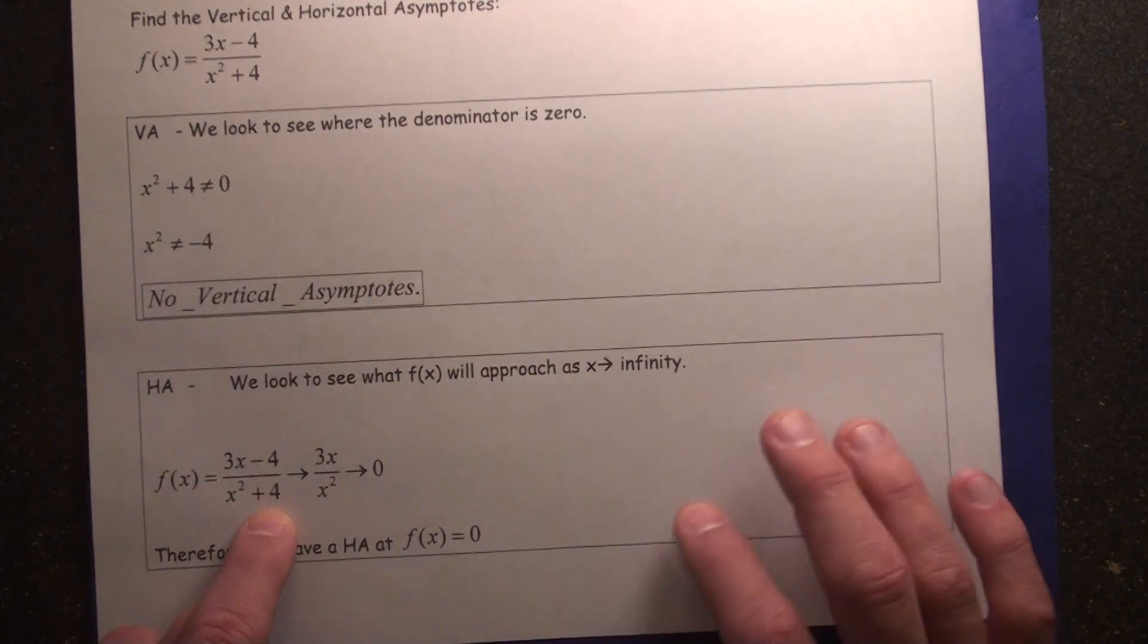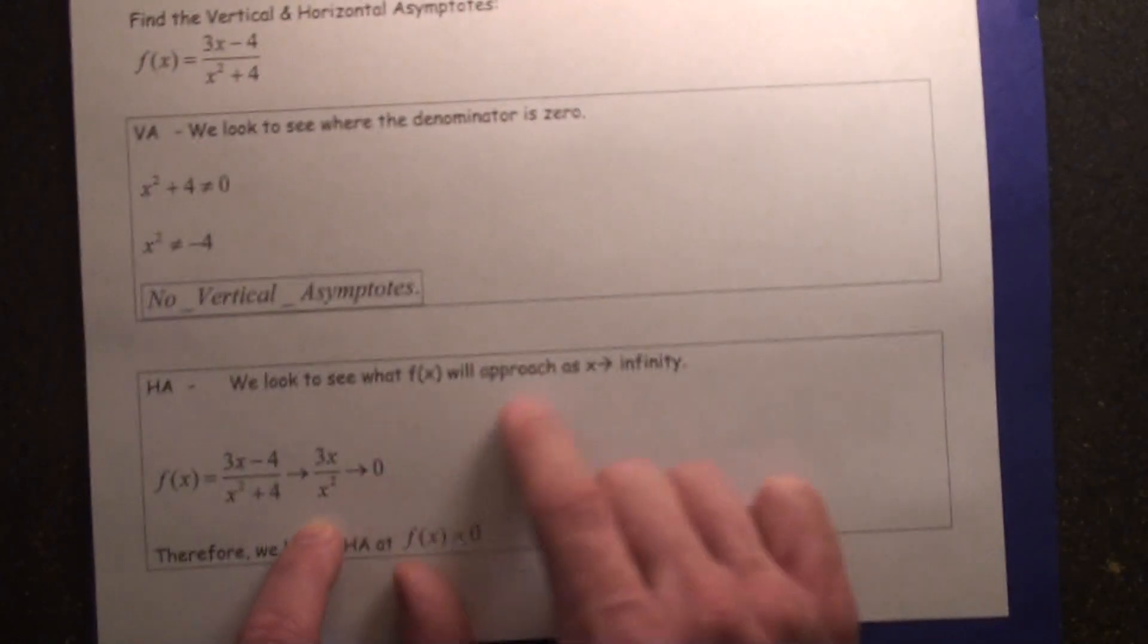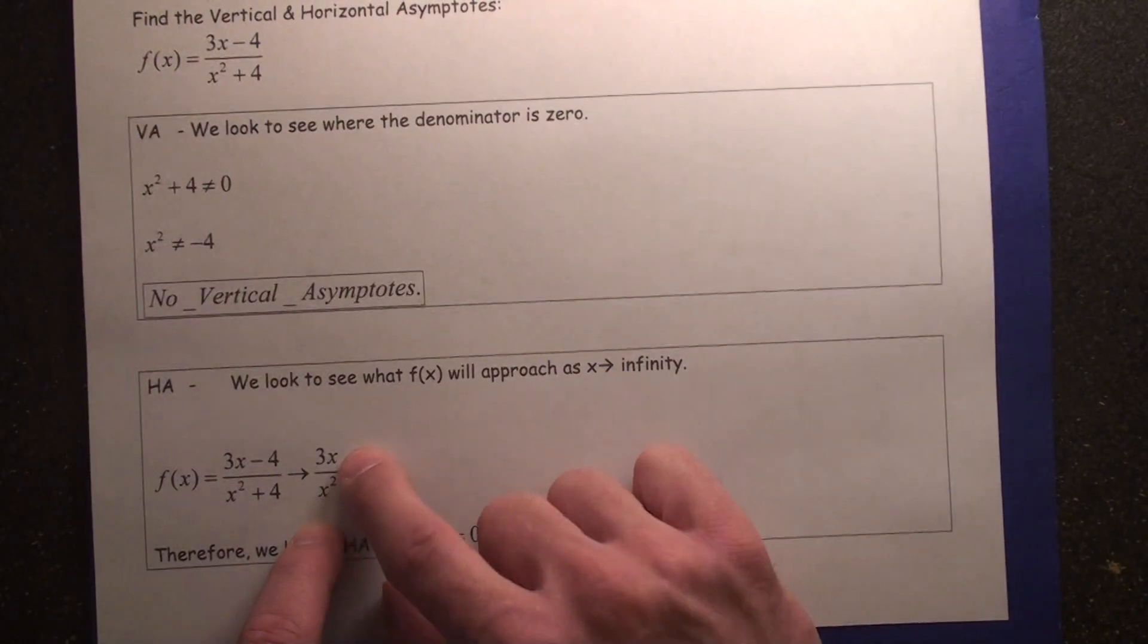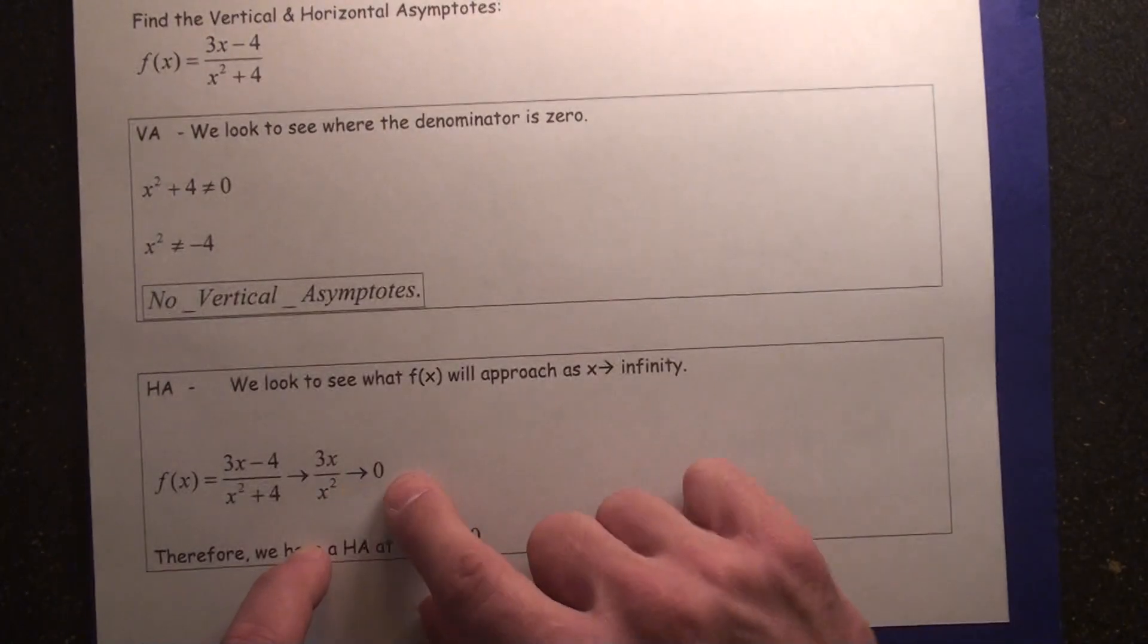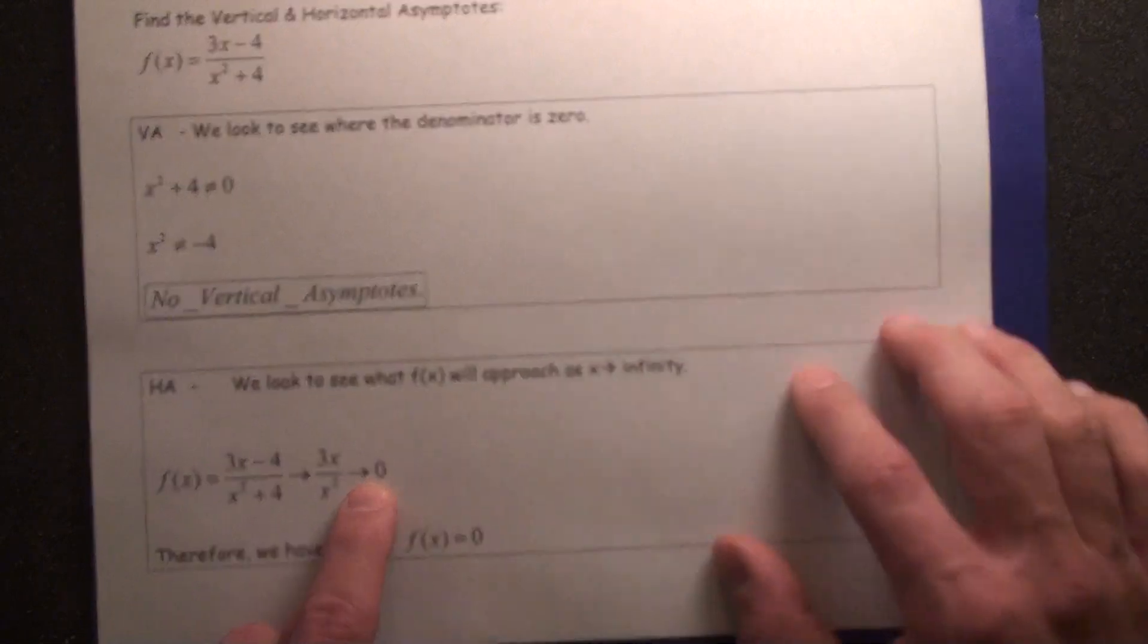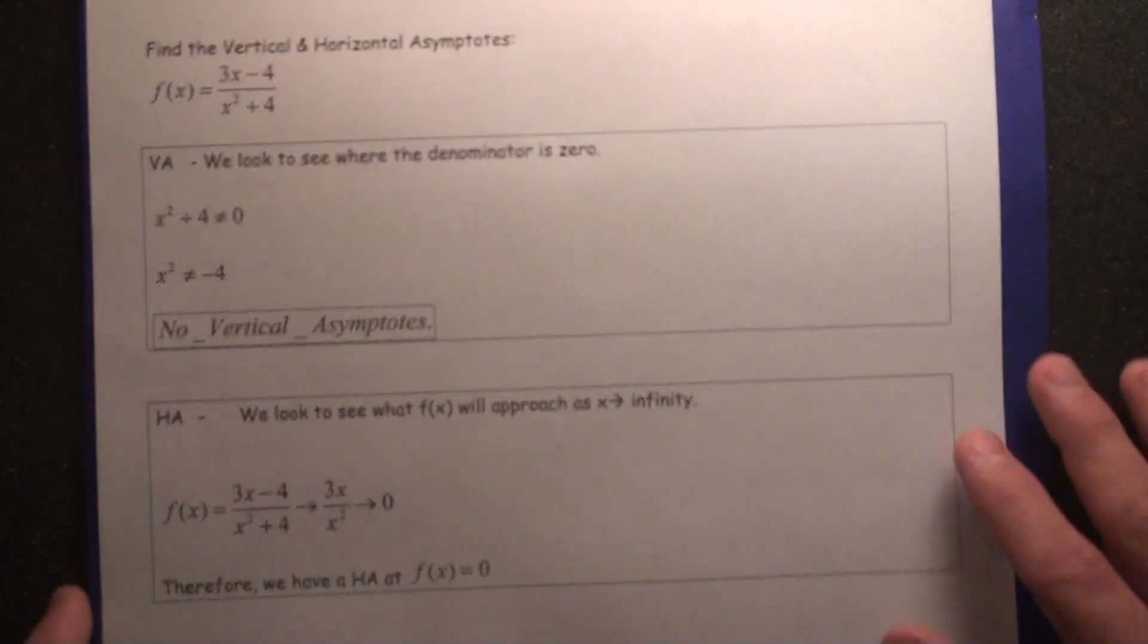As x is getting closer and closer to infinity, what's happening is the denominator is growing at a much larger rate because the degree is larger. Therefore, we would say f of x approaches 0. Therefore, we have a horizontal asymptote at f of x equals 0.